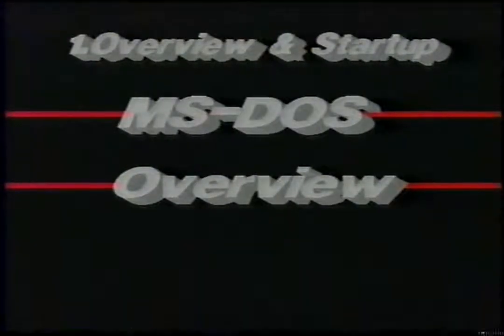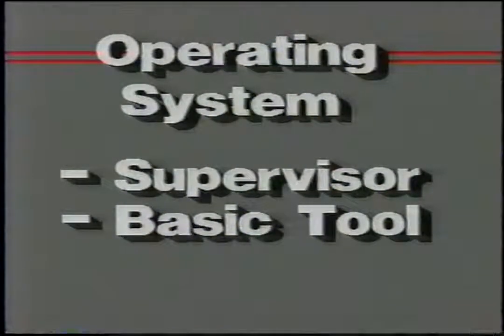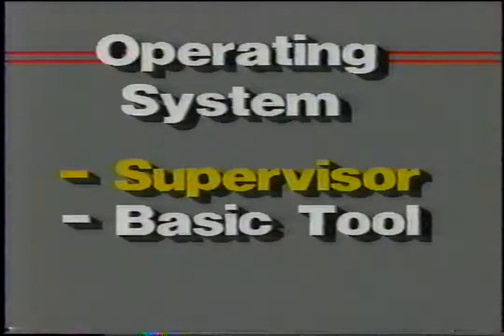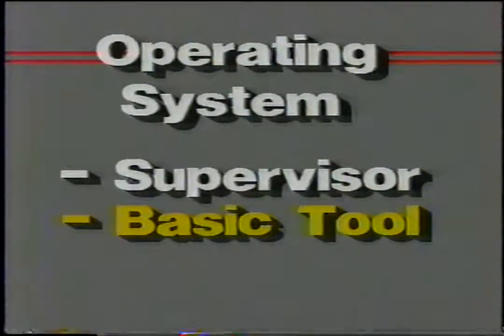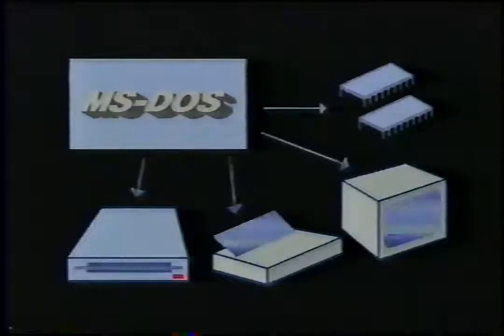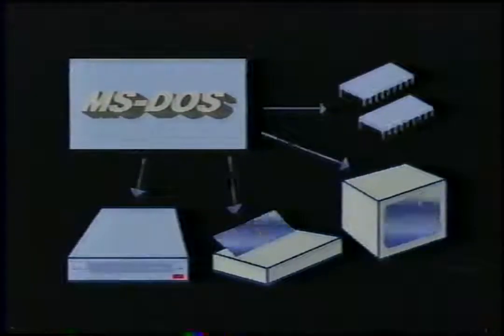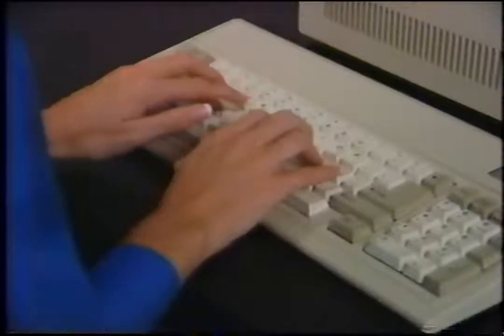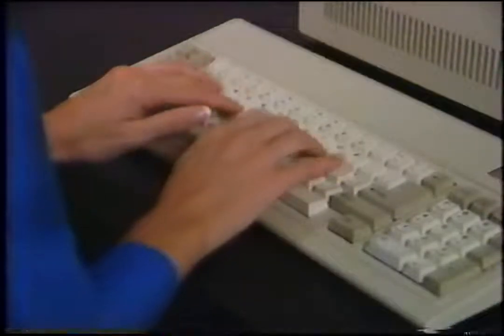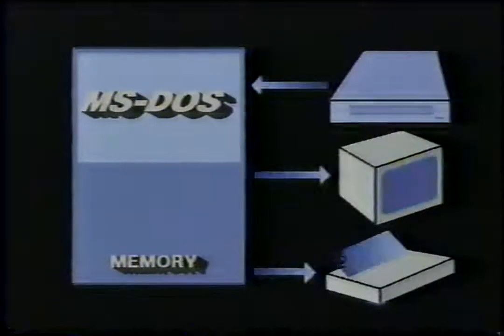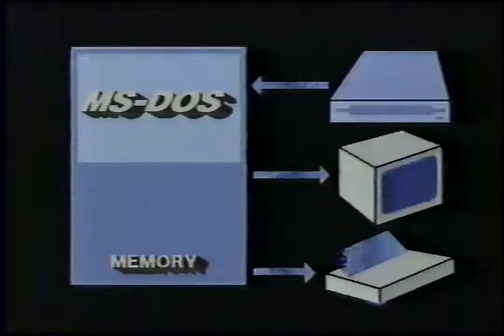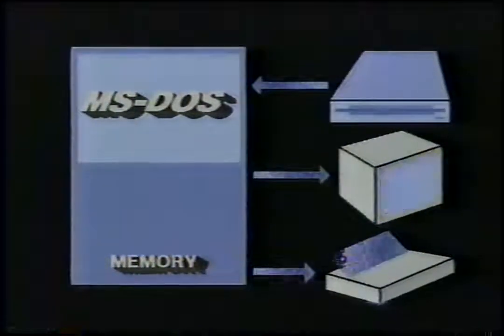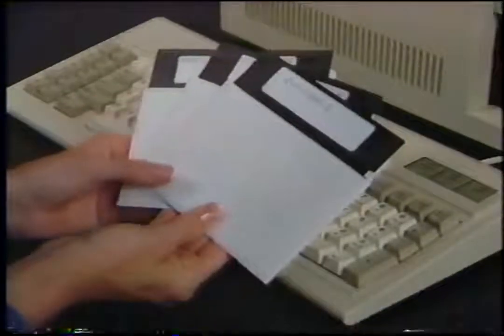Our first lesson describes what MS-DOS does for you and how to start it on your PC. MS-DOS is one example of a class of computer programs called operating systems. An operating system supervises all activities inside your computer — it's the basic tool on your computer. For example, whenever you turn on the power, MS-DOS initializes all the electronic chips and components. It then accepts commands you type on the keyboard and carries them out. As it executes your commands, it coordinates data flow between various components such as memory, disk drives, and the printer. It also has facilities for managing the data on your disks.